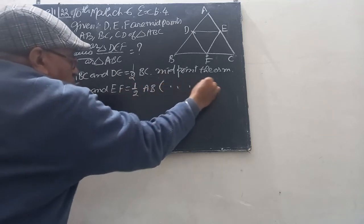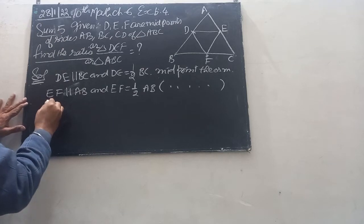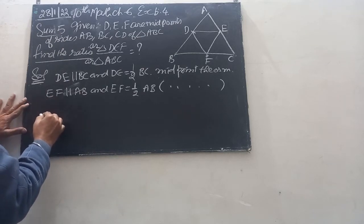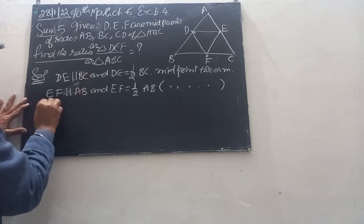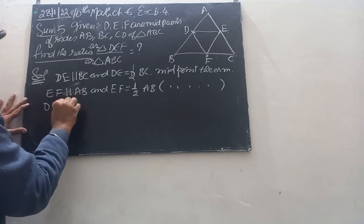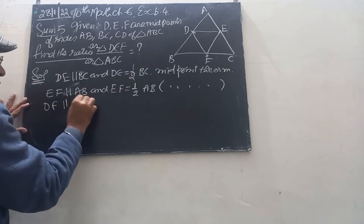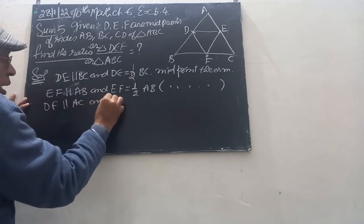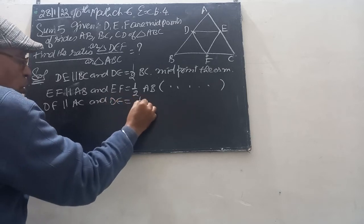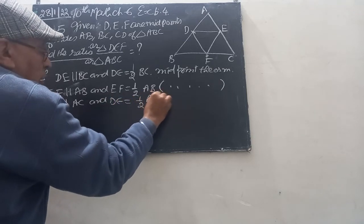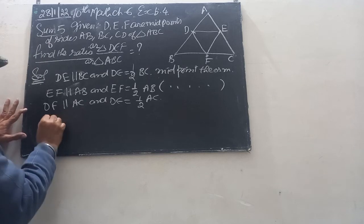DF is parallel to AC and DF is equal to half of AC. So the area of triangle...